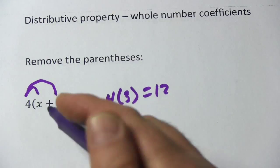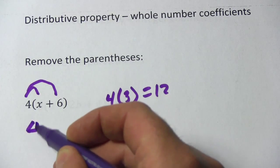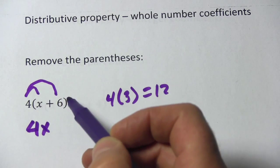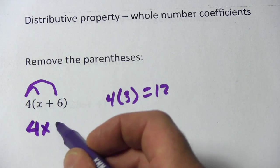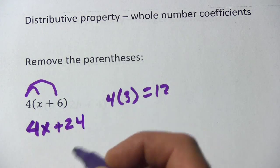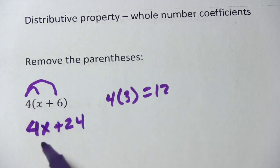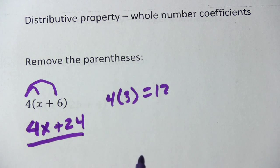So let's try this. 4 times x is 4x, and 4 times 6 is 24, and that's a positive 24. So we distribute the 4, and we get 4x plus 24.